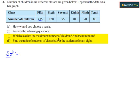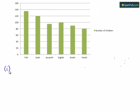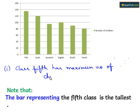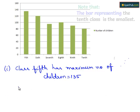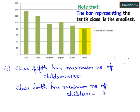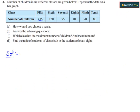In part B, first question: which class has the maximum number of children and which has the minimum? By referring to the bar graph, class 5th has the maximum number of children, which equals 135. Class 10th has the minimum number of children, which equals 80.